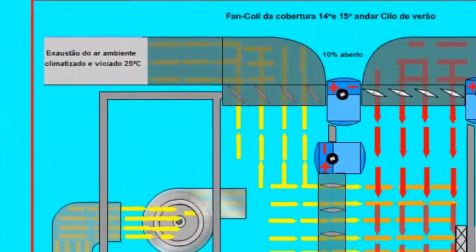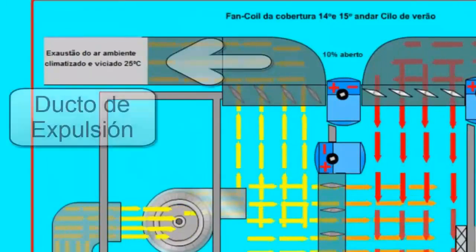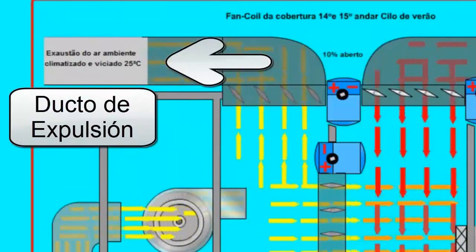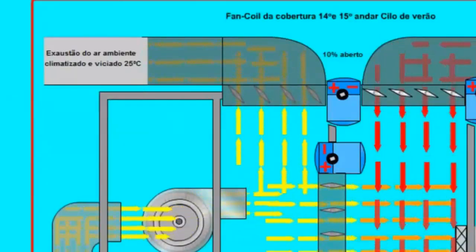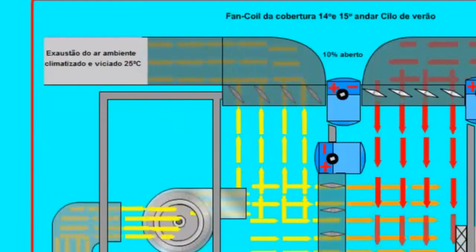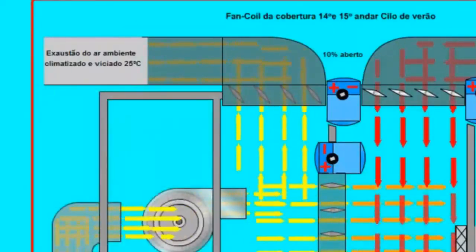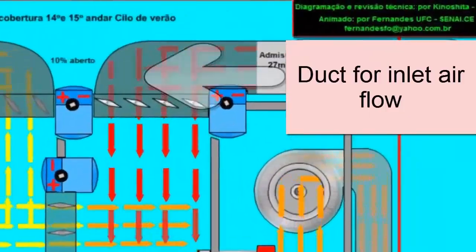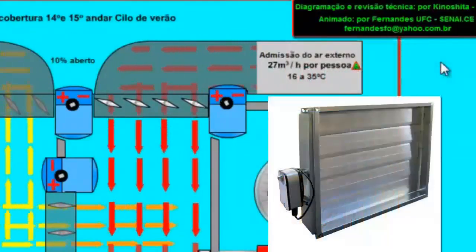Air conditioning exhaust duct. Through this duct, a percentage of the already conditioned air that comes from the premises is expelled to maintain the CO2 concentration values at the recommended PPM. To control the amount of air being expelled, there is a damper which is currently open at 10%. To replace the flow that has been expelled, there is an inlet duct from the outside, responsible for bringing fresh air from the street. The air flow is controlled by means of a grill, which in this case is open at 10%.